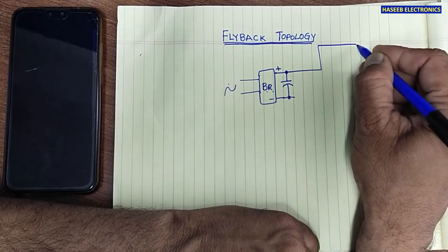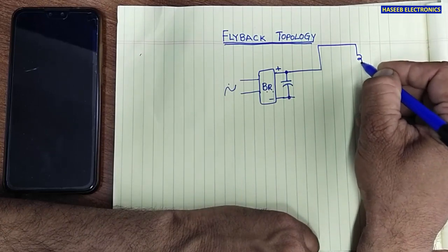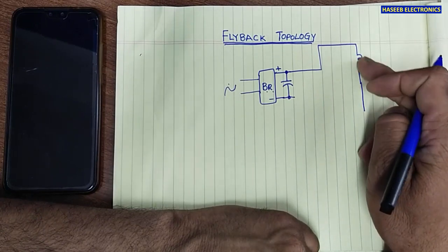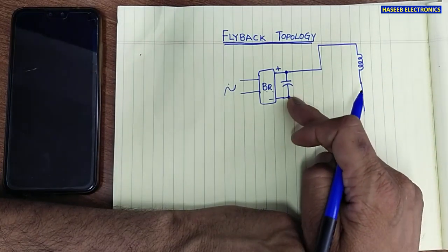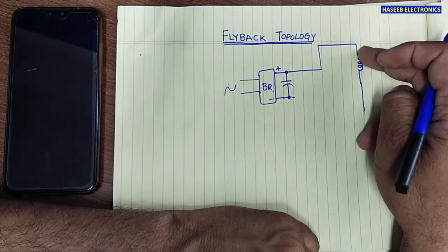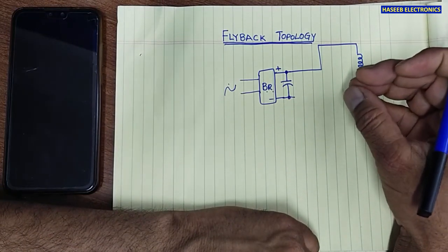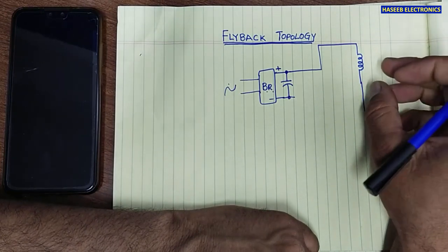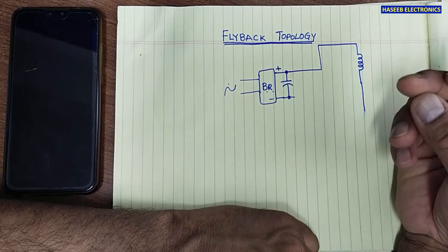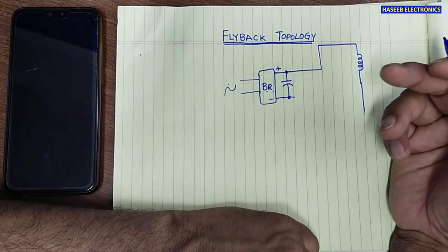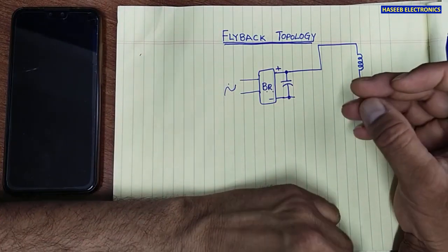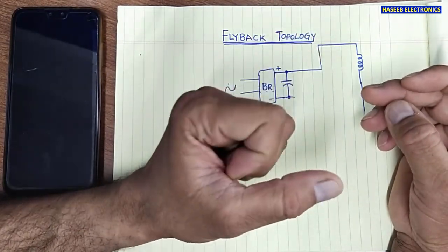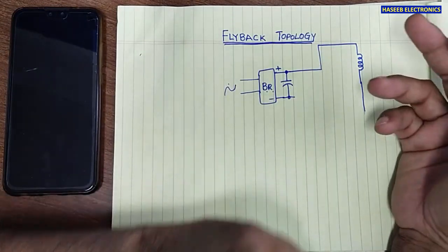If I have this transformer winding and you connect DC directly to the primary, once current starts to flow, a magnetic field will build up, but after that it will not collapse — it will just become a piece of electromagnet. But from a transformer we need a varying magnetic field — collapsing, expanding, collapsing, expanding — similar to a generator.